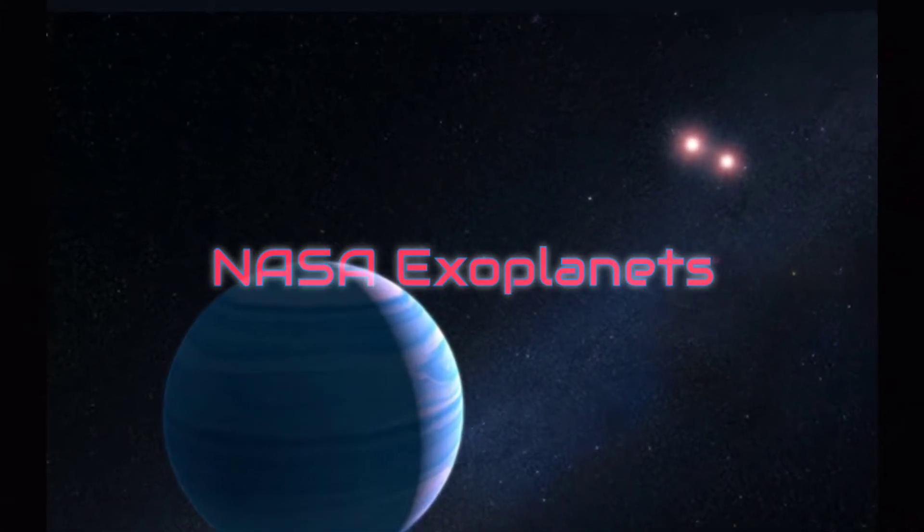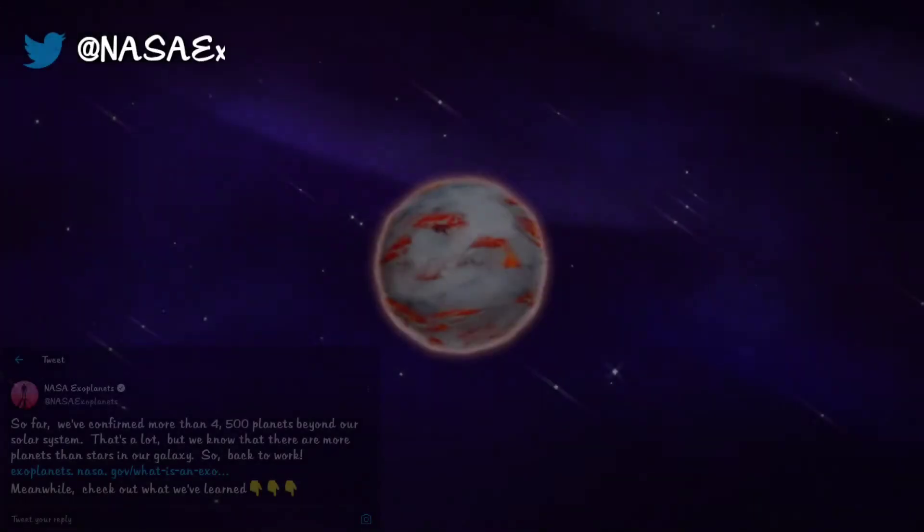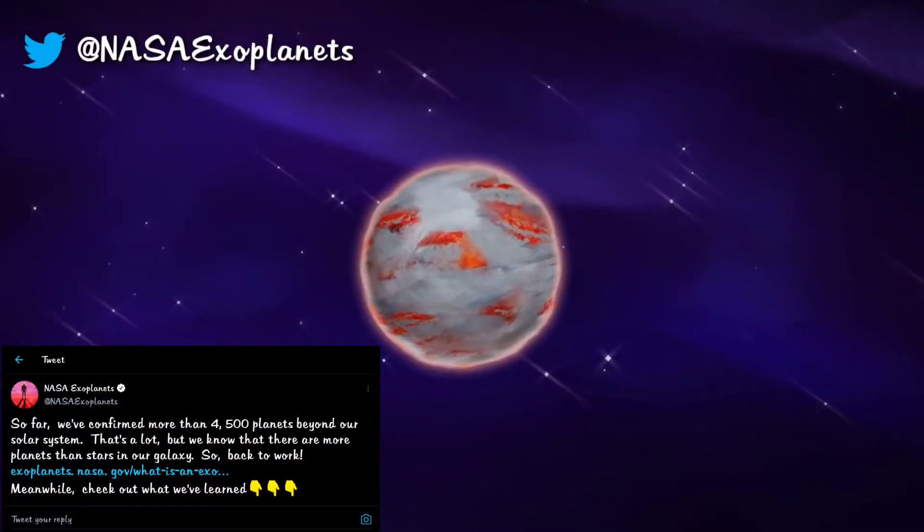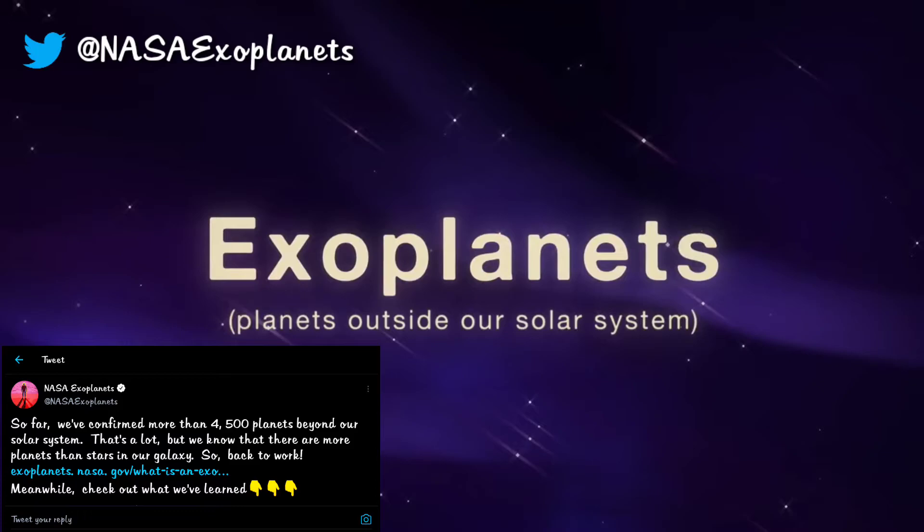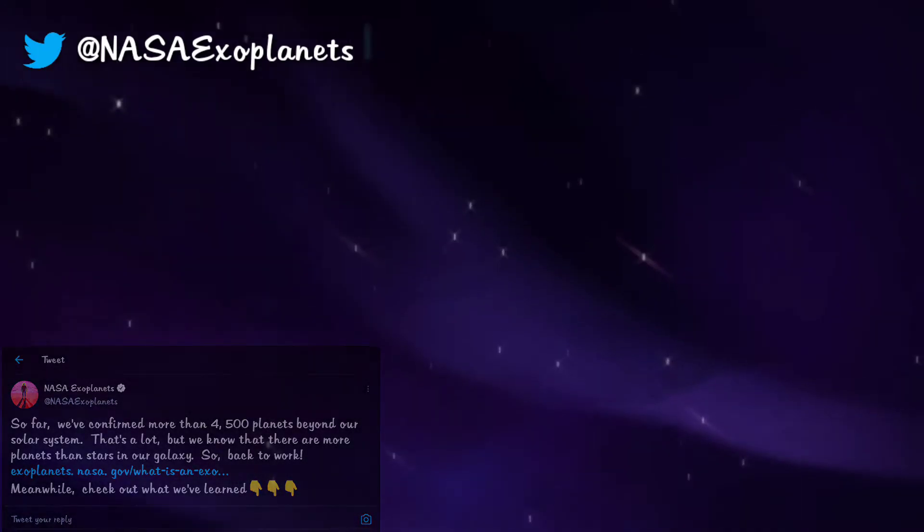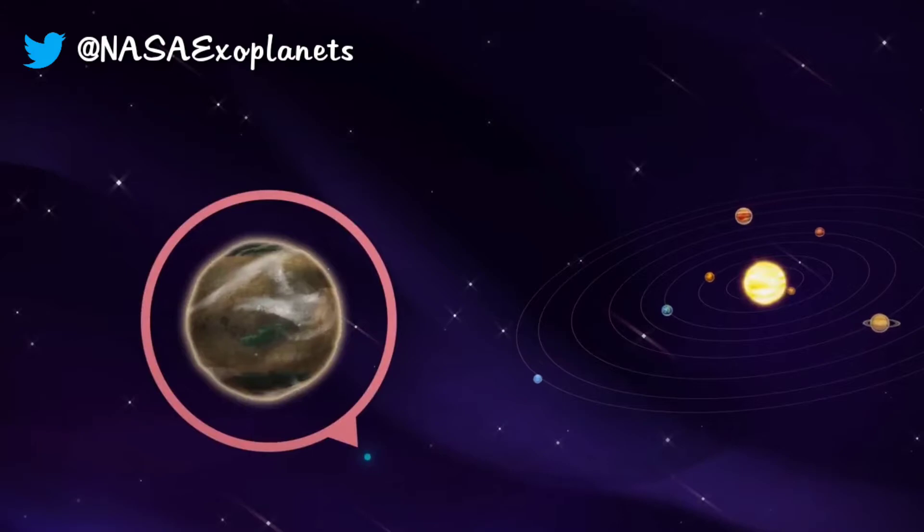NASA Exoplanets: Scientists have discovered more than 4,500 exoplanets so far. But do you still wonder what they are and what we know about them? Watch the YouTube video by NASA to find out. Link in description.